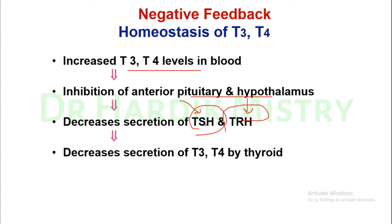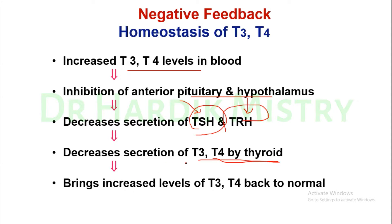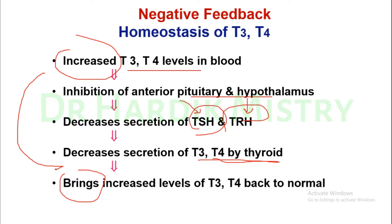Once there is a decrease in secretion of TSH and TRH, there is a decrease in secretion of T3 and T4 hormones by the thyroid gland. This decrease in thyroid hormone level brings the elevated T3 and T4 levels back to normal. This negative feedback loop is activated only when the thyroid hormone level has increased, and through these processes the T3 and T4 level is restored to normal.